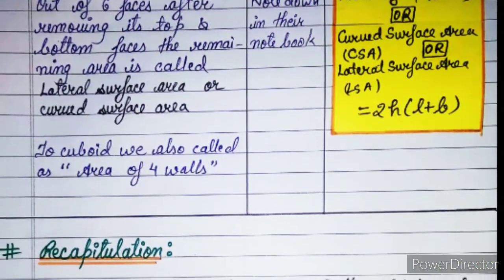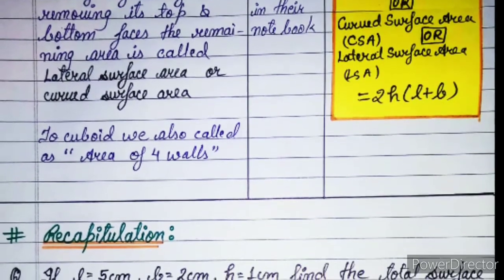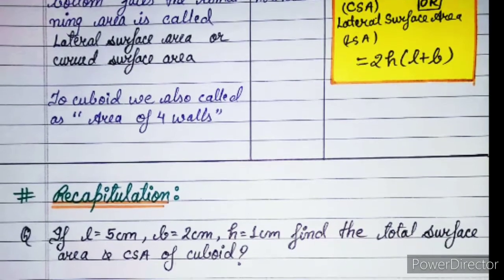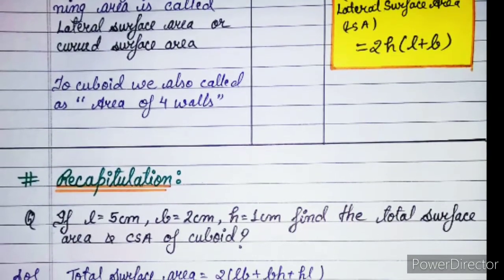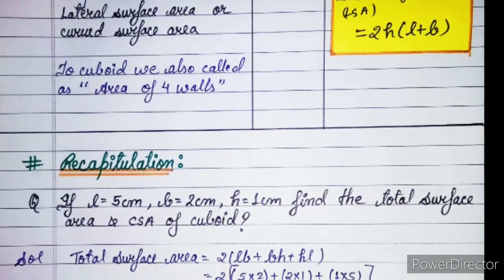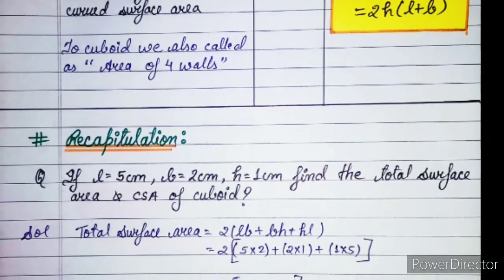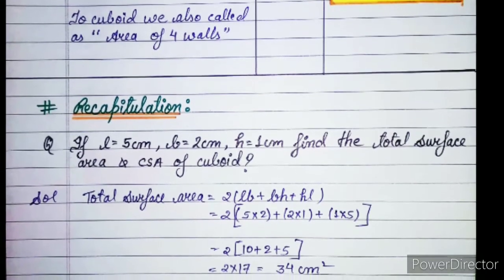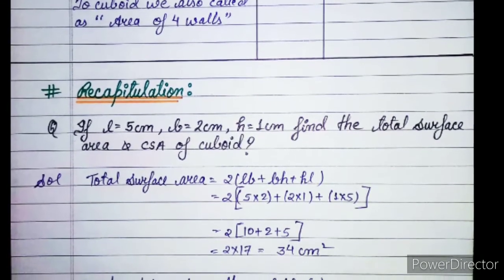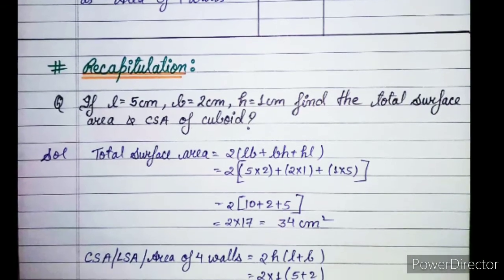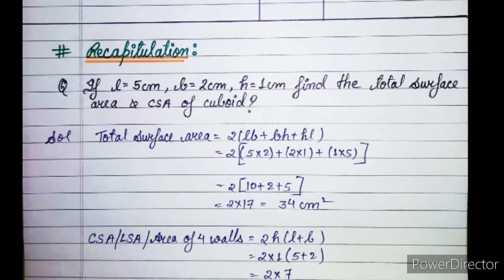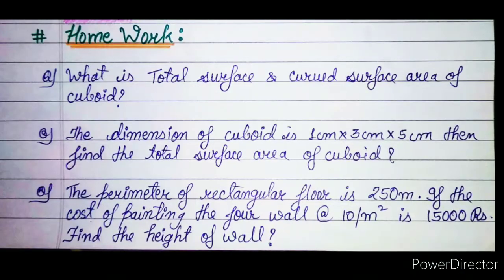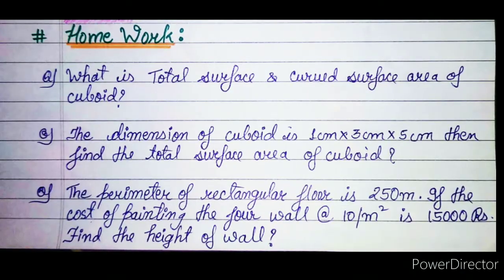Then we will explain the curved surface area, lateral surface area or area of 4 walls, so that they will know that we can remove the top and bottom. Then we have the recapitulation part which we can give them some questions in practice so that they can apply the formula in reality and find the surface area or the curved surface area or the total surface area easily.